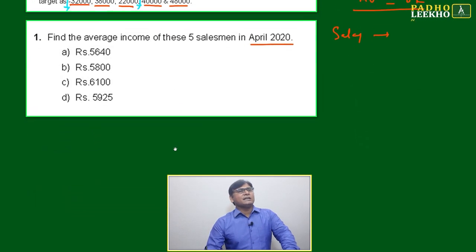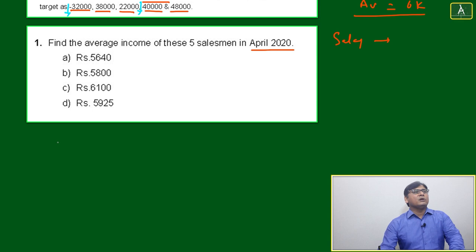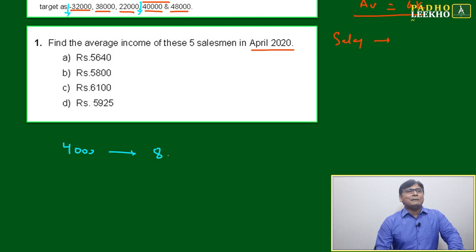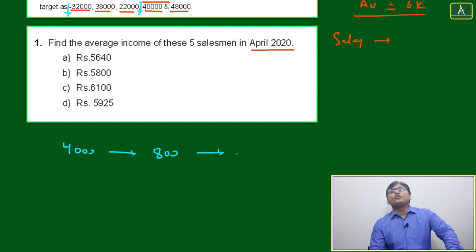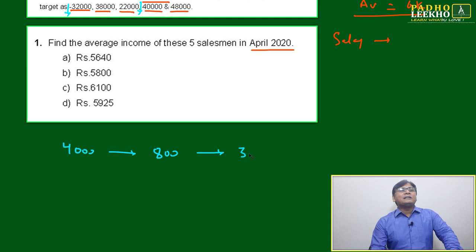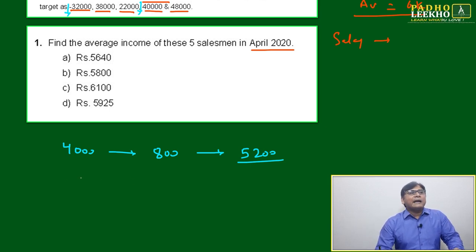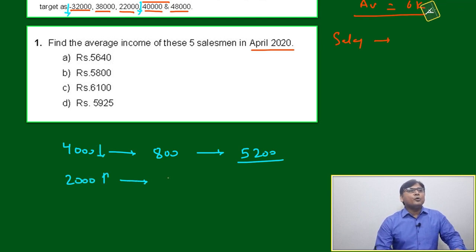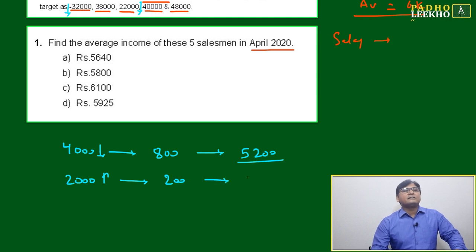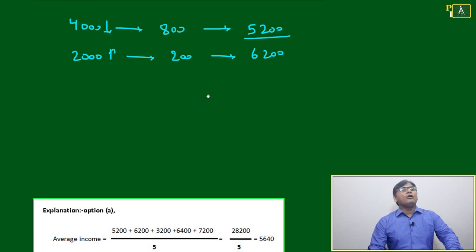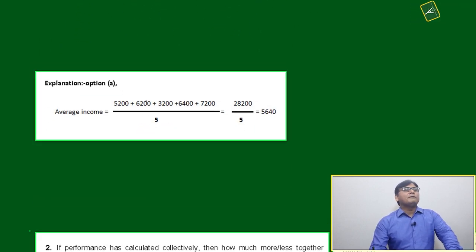For salesman one — 32,000 means 4,000 less, so 20% penalty: 20% of 4,000 is 800, making effective salary 5,200. For salesman two — 38,000 means 2,000 more, so 10% incentive: 200 extra, giving 6,200. Likewise we calculate for all five salesmen, and the results come to approximately 5,200; 6,200; 3,200; and so on.